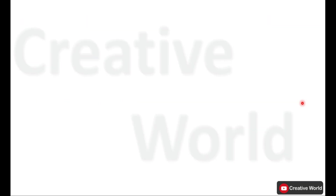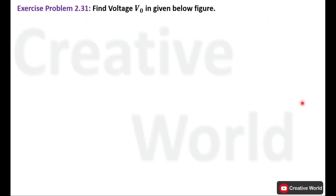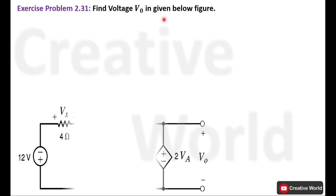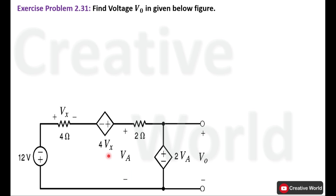Now move towards the problem. Exercise problem number 2.31: find voltage V0 in the given figure. This is the circuit diagram of the given problem. We have to find voltage across this voltage dependent source, labeled as V0, and the amount of V0 is equal to 2Va.